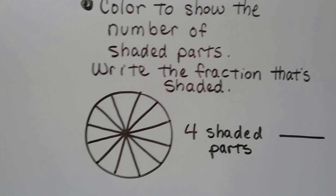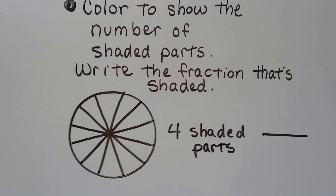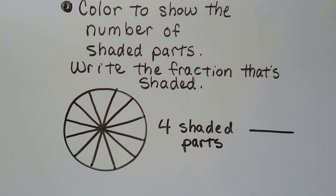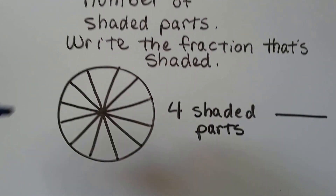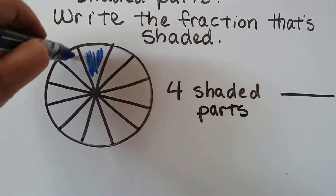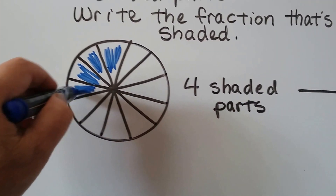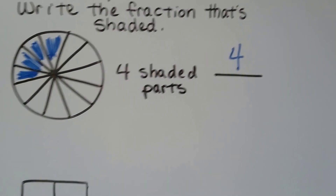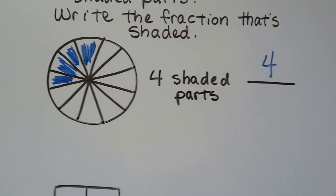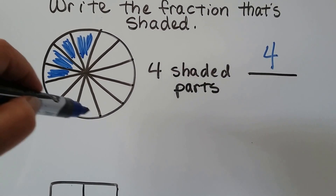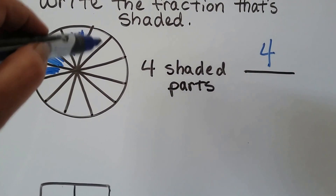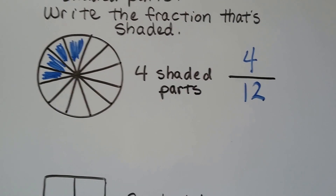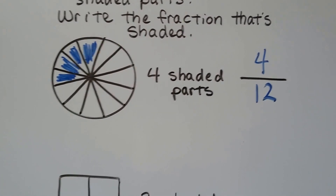Now it says color to show the number of shaded parts and write the fraction that's shaded. We've got a circle here with a bunch of equal parts and we're supposed to have four shaded parts. So let's shade four of them: one, two, three, four. There's four shaded parts — that's going to be the top of our fraction because that's how many are shaded. How many equal parts are there? There's four, five, six, seven, eight, nine, ten, eleven, twelve. That would be four twelfths — four shaded parts out of twelve equal parts.